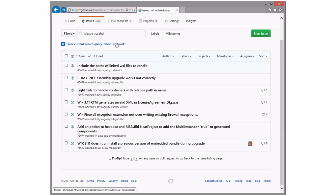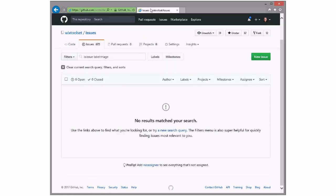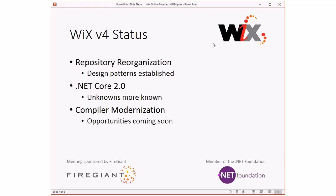I think we're done with triage — we didn't have any left over from before. Moving on to WiX 4. If you remember last week, we talked about the three big things going on in WiX 4: the repository organization, .NET Core 2.0, and the compiler modernization. Two weeks ago we said that Sunday we would be hanging out and doing a lot of work on this front, and we did. Sean, Bob, and I were together for about seven hours. The video is up on YouTube — about six or six and a half hours of content — if anybody wants to go back through it.